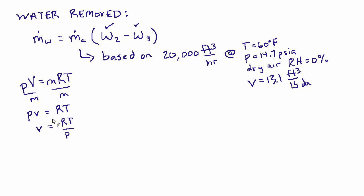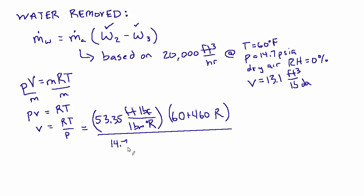And since this is completely dry air, we don't have to worry about the partial pressure of water vapor and all that stuff. It's all just air. So the specific gas constant of air is 53.35 foot-pound-force divided by pound-mass-degree-Rankine, times the temperature of the air which is 60 degrees Fahrenheit, but we have to add 460 to make it Rankine, divided by the pressure which is 14.7. Instead of psi, I'm going to write it as pound-force per inch squared.